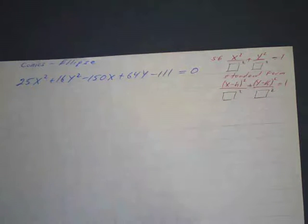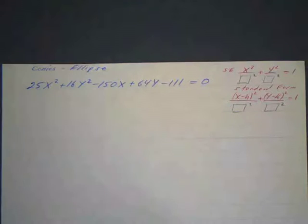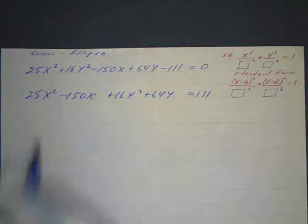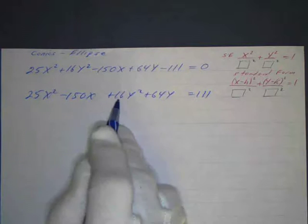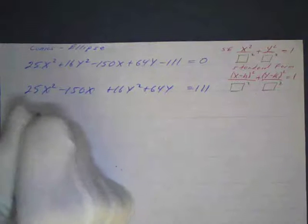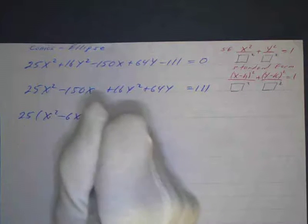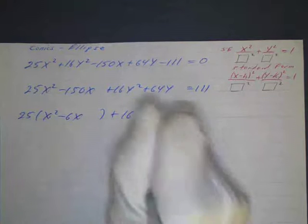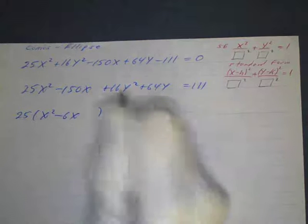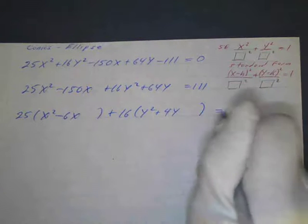First of all, we're going to try to do our completing the square process. So let me start that. We'll separate these out, so we'll put the x's together. Make sure you can all see this. And then the y squares plus 16. And I'll put the 111 on the other side. Then I'll take out the number in front of the x squared and the y squared terms, factor those out.